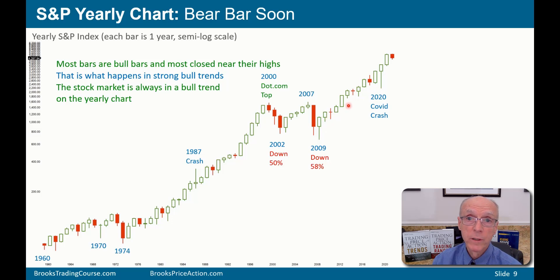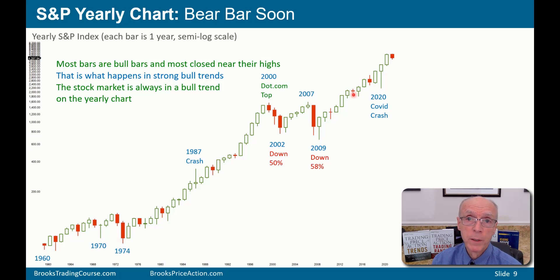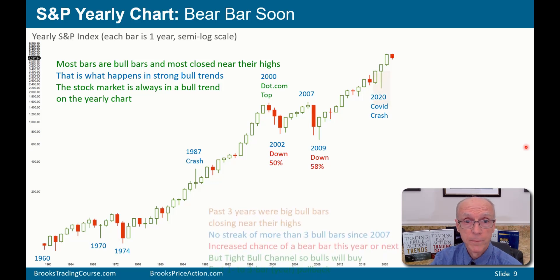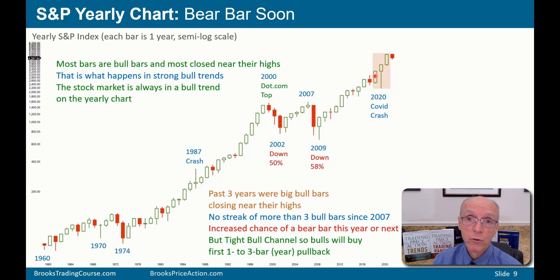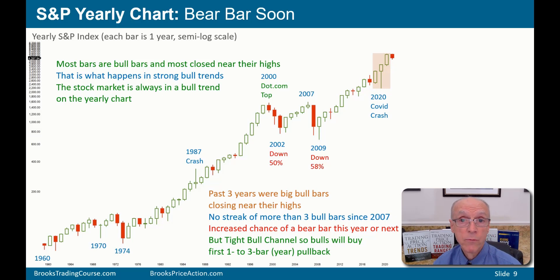Most of the bars are bull bars closing near their highs. On the yearly chart, the stock market has always been in a bull trend. Therefore, if you get a reversal, it's either going to be brief — a bear bar or two — and then the bull trend resumes, or it might lead to a trading range and then the bull trend resumes. There's not a lot of downside risk. The past three years were each bull bars closing near their highs. In the past 10 years, we have not had streaks of three consecutive bull bars very often, so chances are this year or next year will be a bear bar.